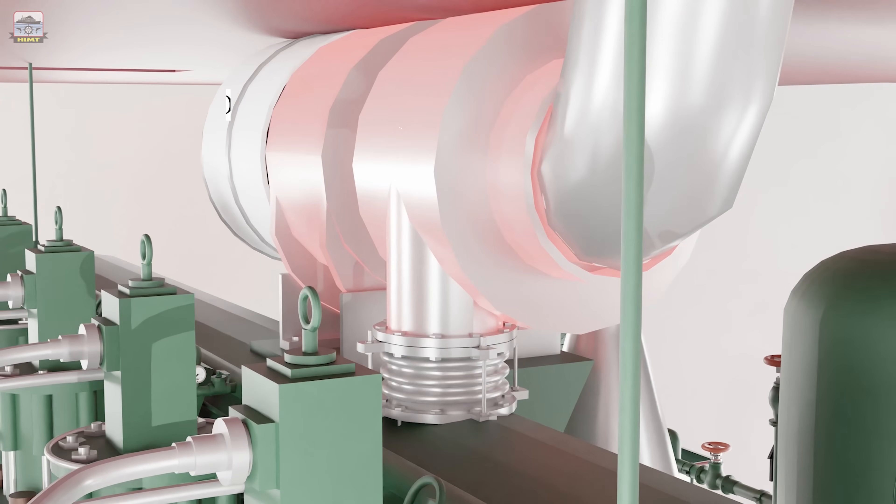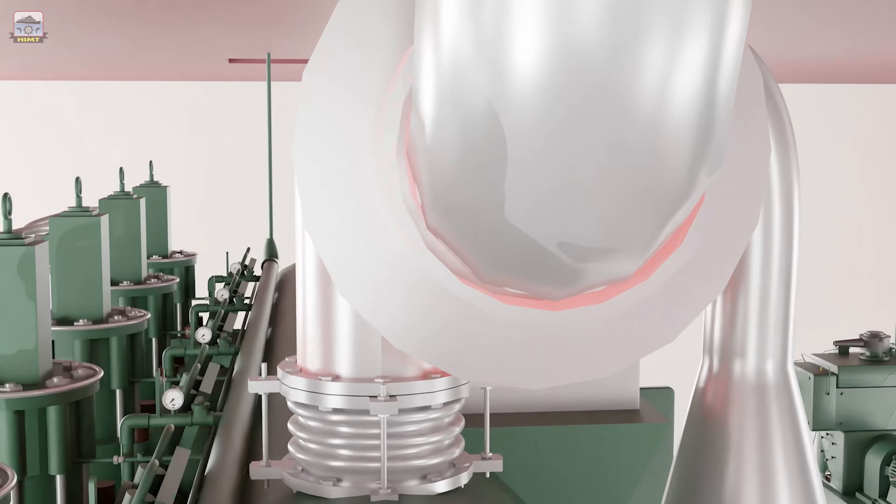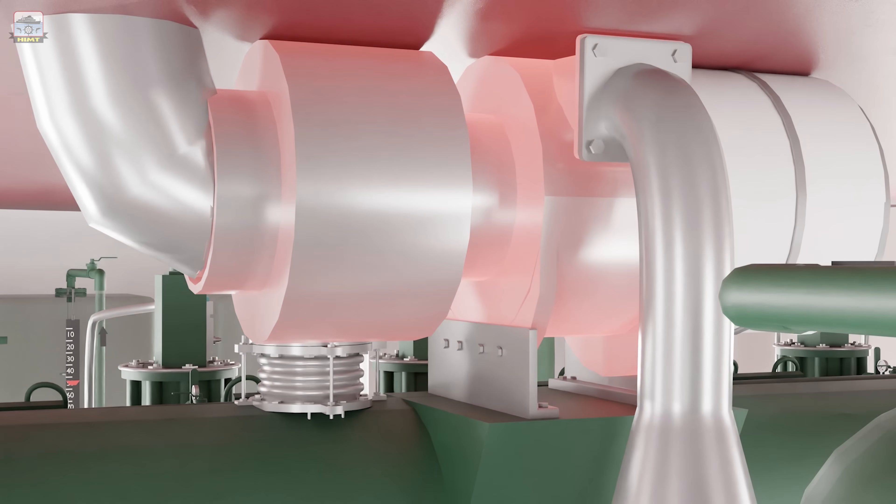The turbocharger helps in increasing the power output of the same engine by supplying air under pressure for combustion. It consists of two main parts, a compressor and a turbine. Both the compressor impeller and the turbine wheel are mounted on the same shaft separated by labyrinth and gland seals.